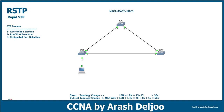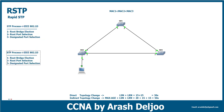Let me review the STP process. In STP — IEEE 802.1D — we have three steps for creating a loop-free LAN: first is root bridge election, second is root port selection in each switch, and third is designated port selection in each link. Good news — the RSTP process, IEEE 802.1W, is exactly the same.